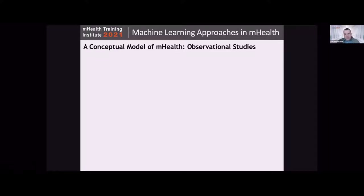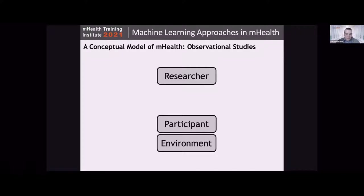We'll start with a really basic model, thinking about an observational study design. In a study design of this type, we start with a researcher who has a particular problem they're interested in — some facet of health or behavior they want to study. They'll define a participant population, a cohort. Those participants exist in some broader context, which we'll think of as constituting that participant's environment — everything external to the participant, such as family context, where the person lives, their neighborhood, their broader healthcare situation.